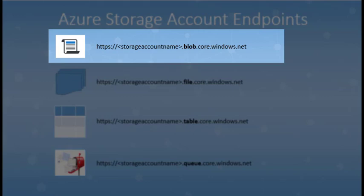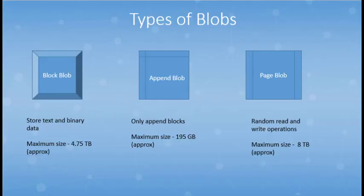Now we understand that a blob storage service is created within a storage account. Let's talk about the types of blobs that get stored in a blob service. The term blob is an acronym for binary large object. So a blob itself can be any kind of file — a document, image, video, VM disk, or a database. But when uploading a file, you need to categorize the type of file and how that file will be treated in Azure. One thing to note here is that once a blob is created in Azure, you cannot change its type.